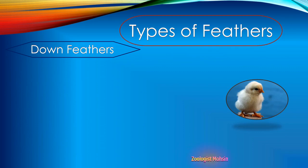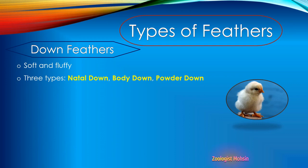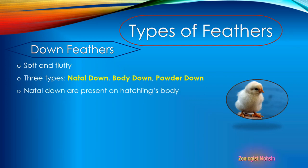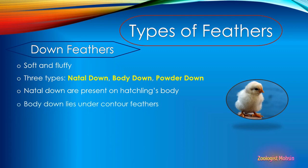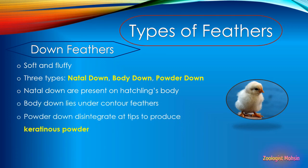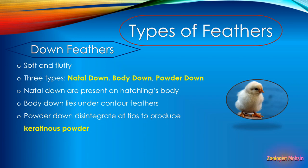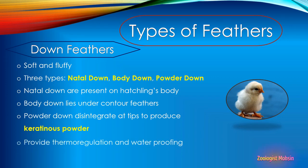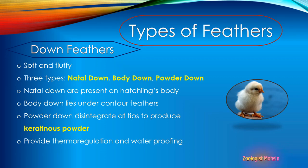Next type is down feathers — soft and fluffy. There are three types: natal down, body down, and powder down. Natal down is present on hatchlings' bodies. Body down lies under contour feathers. Powder down disintegrates at the tips to produce a keratinous powder — that is the main salient feature of powder down. This powdery substance is used for waterproofing, especially by birds like pigeons. Down feathers provide thermoregulation and waterproofing as well.